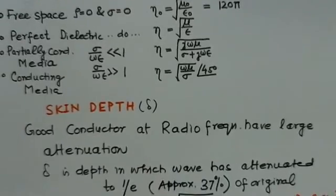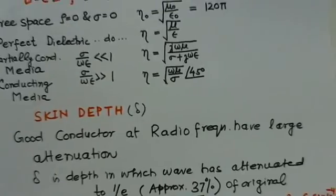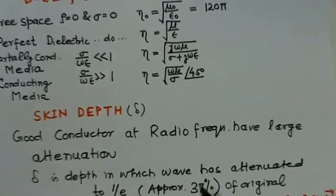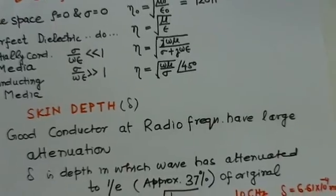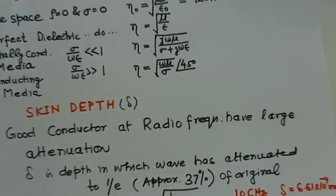One very important parameter for conducting media is skin depth. When we send a radio frequency wave through a good conductor, there is very large attenuation. Skin depth δ is the depth in the conductor in which the wave has attenuated to 1/e or approximately 37% of the original value.